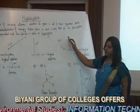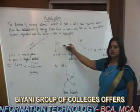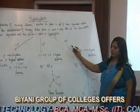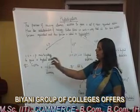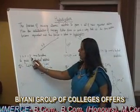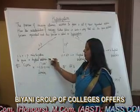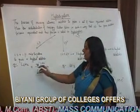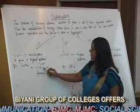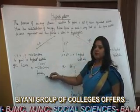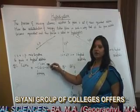Hybridization is of three types: SP hybridization, SP2 hybridization, and SP3 hybridization. In SP hybridization, 1S and 1P orbitals mix together to give two hybrid orbitals. The example is C2H2, or acetylene. This is the structure of acetylene — it is linear in structure and the bond angle is 180 degrees.